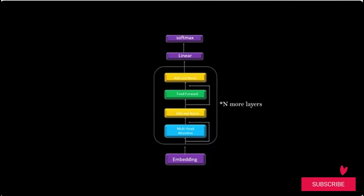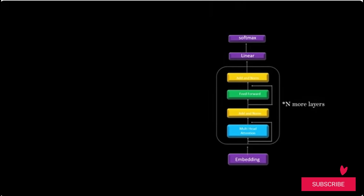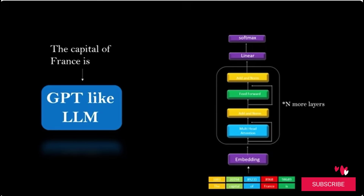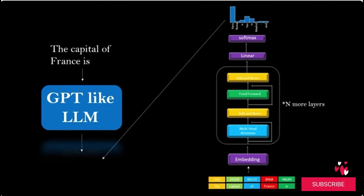To understand how the model calculates this probability, we need to explore the decoder architecture. The decoder is the engine behind text generation in large language models. Before an LLM can generate text, it must be trained on a massive dataset. After the model is trained, we can use it to generate text by providing some context words. For example, when we give the text 'The capital of France is' to the model, it is first tokenized into individual tokens, which are then sent to the decoder block of the LLM. The model then outputs a probability distribution of the most likely next words, we sample from that distribution, and in our case the model generates 'Paris.'